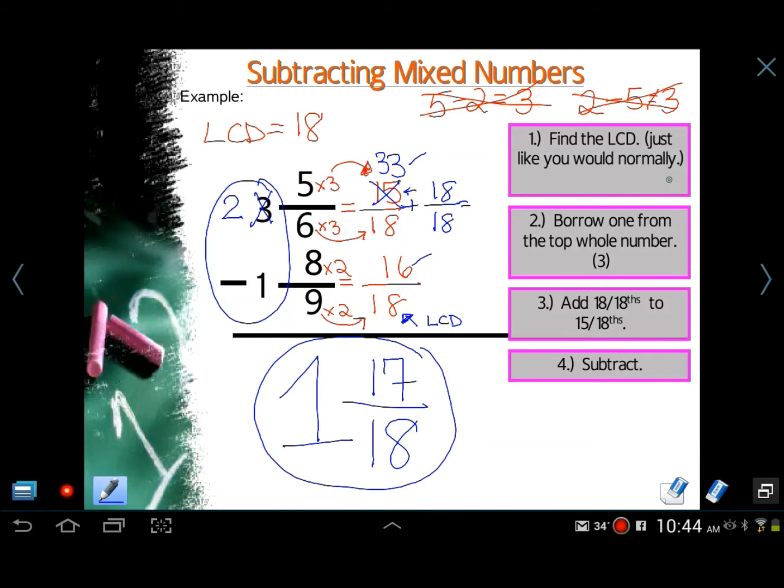You'll notice here that the steps that I wrote down are pretty much the same except for step three. Because that step depends on what the denominator is. Our denominator was eighteen, therefore we added eighteen. If the denominator was six, we would have done six-six. If the denominator was five, we would have added five-fifths. Okay, moving right along.